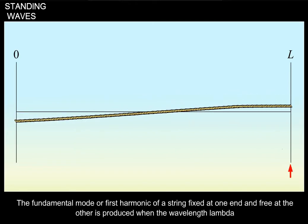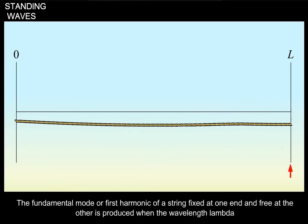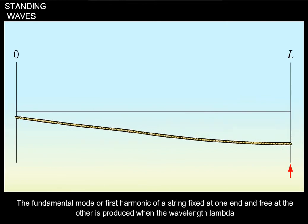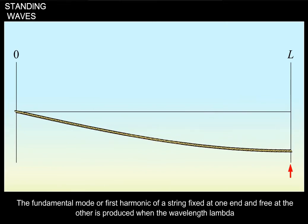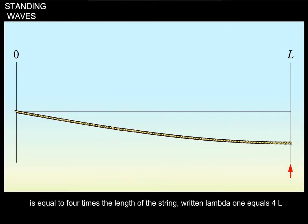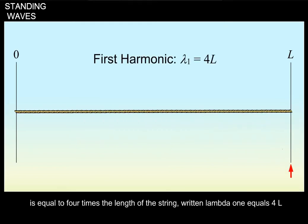The fundamental mode or first harmonic of a string fixed at one end and free at the other is produced when the wavelength lambda is equal to 4 times the length of the string, written lambda 1 equals 4L.